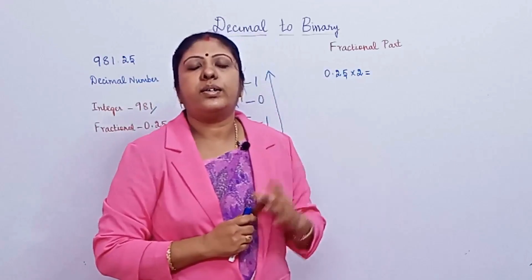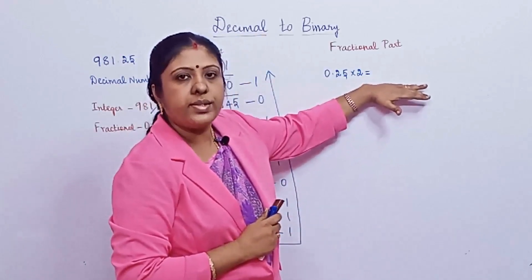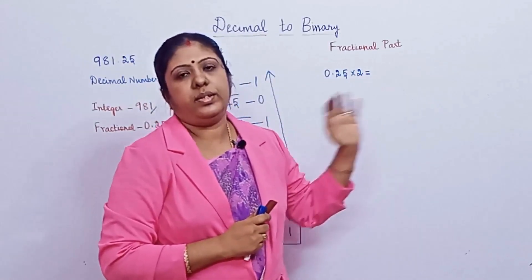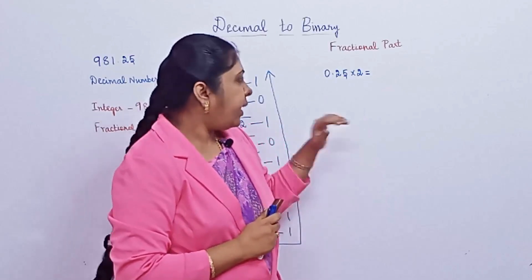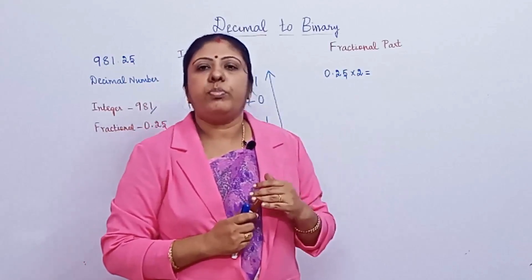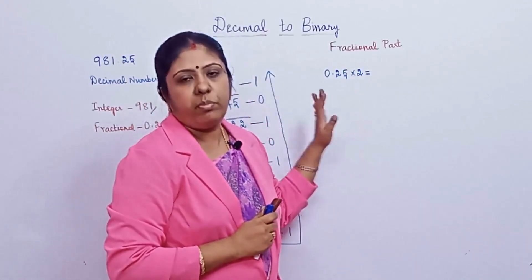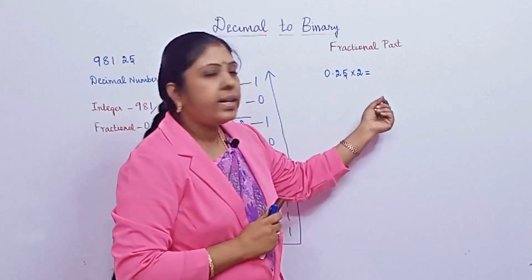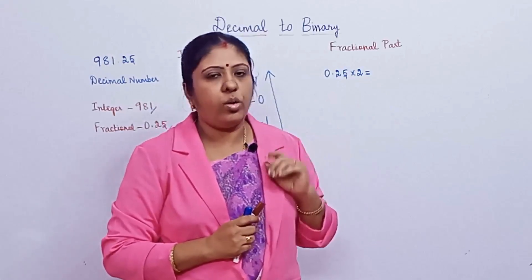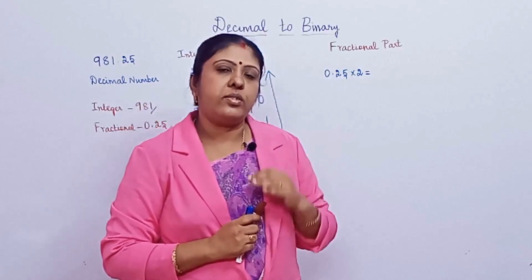The base idea for converting the fractional part is: multiply the fractional part by 2. In the result, note the integer part separately, and then multiply the remaining fractional part by 2 again. This process continues. The process stops when the resultant fractional part becomes 0. After that, we cannot continue because multiplying 0.00 by 2 gives zeros continuously.